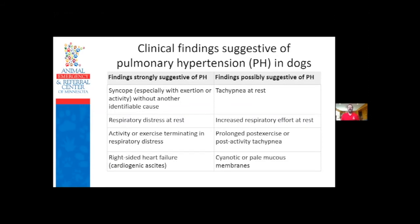The consensus statement lists findings strongly suggestive of pulmonary hypertension: syncope especially with exertion or activity without another identifiable cause, respiratory distress even at rest, activity or exercise terminating in respiratory distress, and congestive right heart failure. Findings that are possibly suggestive include tachypnea at rest, some increased respiratory effort at rest, prolonged recovery from activity, or cyanotic or pale mucous membranes.